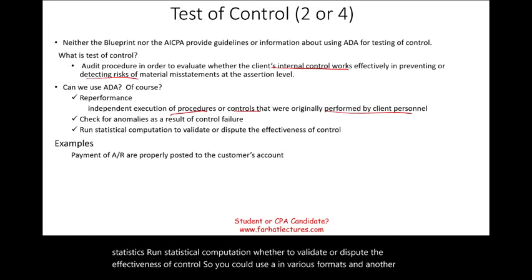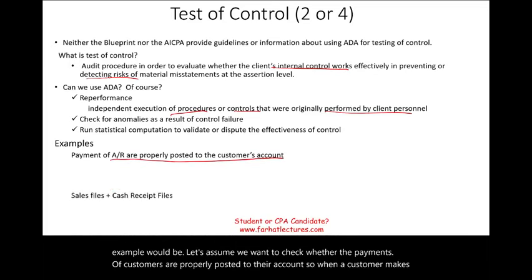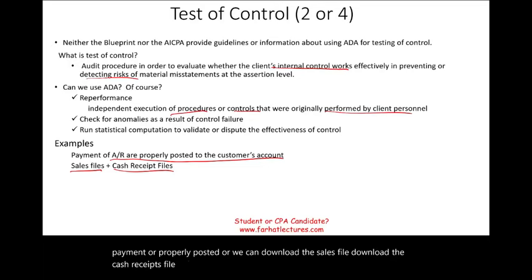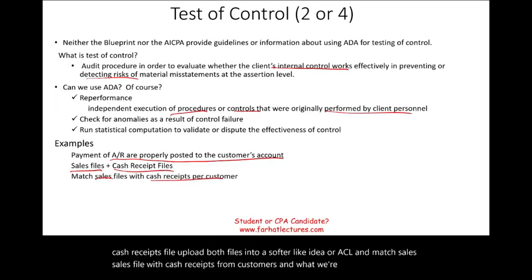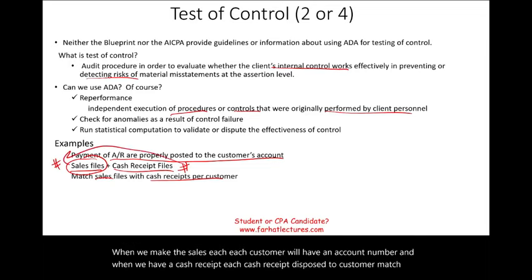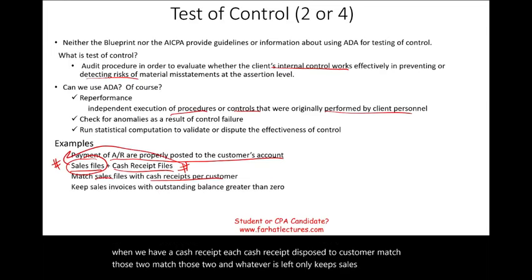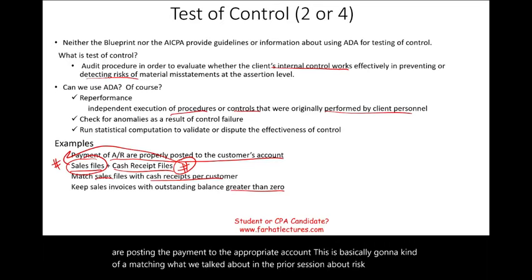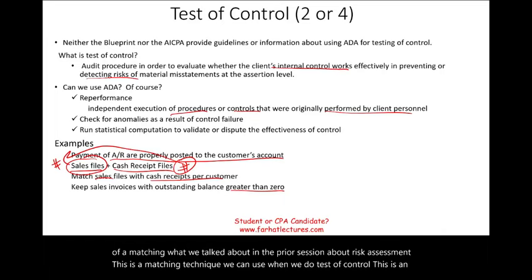We can run statistical computations to validate or dispute the effectiveness of controls. Another example: assume we want to check whether payments from customers are properly posted to their accounts. We can download the sales file, download the cash receipts file, upload both into software like IDEA or ACL, and match the sales file with cash receipts from customers. Each customer has an account number, and each cash receipt is posted to a customer — match those two, and whatever's left are sales invoices with an outstanding balance. This is a matching technique we can use in test of control.